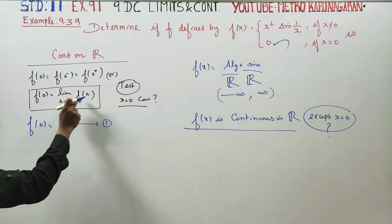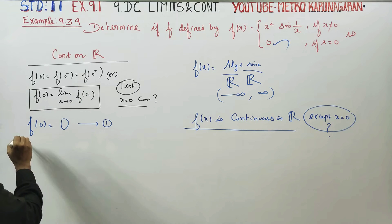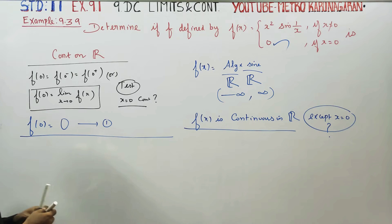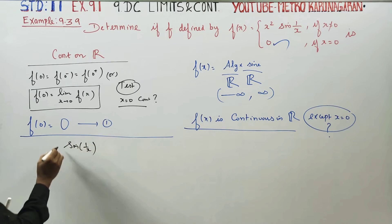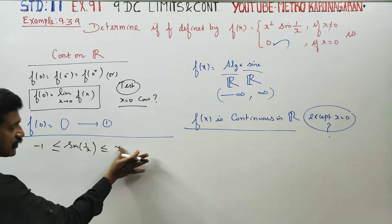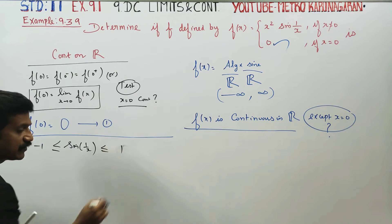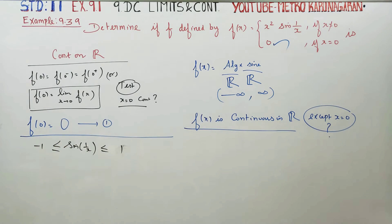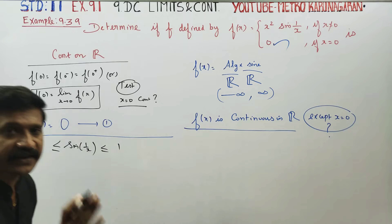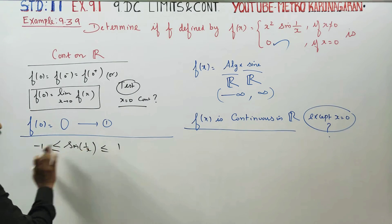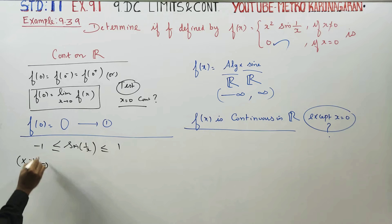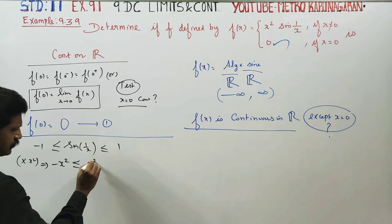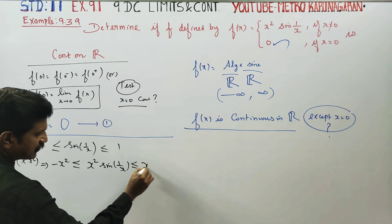Now I am going to use the Sandwich Theorem. What is the Sandwich Theorem? The sine of any angle will always be between minus 1 and plus 1 — that is the range of the sine value. Multiply by x²: minus x² ≤ x² sin(1/x) ≤ x².